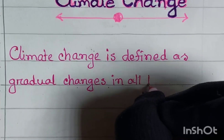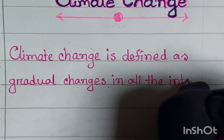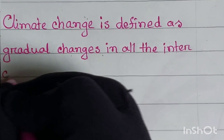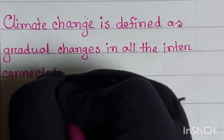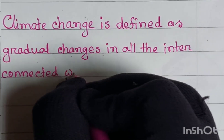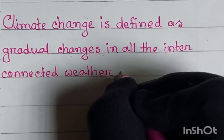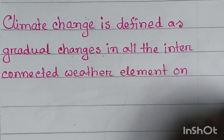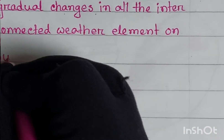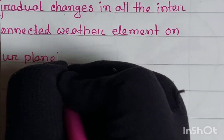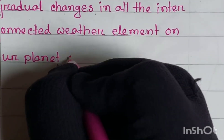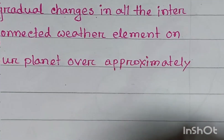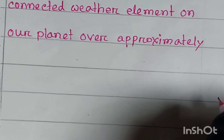Climate change. Climate change is defined as gradual changes in all the interconnected weather elements on our planet over approximately 30 years.